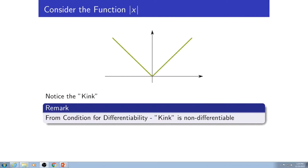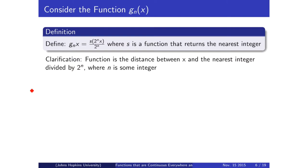Now we're going to talk about the absolute value function. Notice the kink — the point of non-differentiability — which is at x equals zero. Because of the condition for differentiability, a function with a kink is non-differentiable. But what if you were to take a function with a kink, add another kink, and then just keep on adding an infinite number of kinks? That's what we're going to be doing in this video, and we're going to show you how that leads to a function which is continuous everywhere but differentiable nowhere.